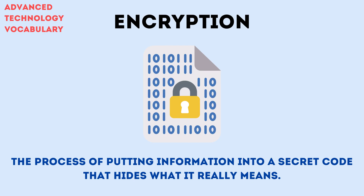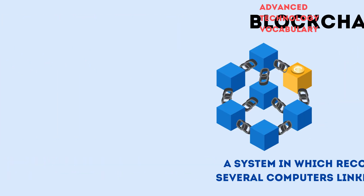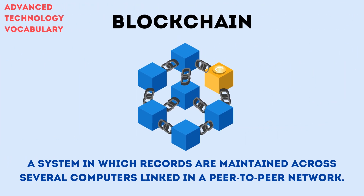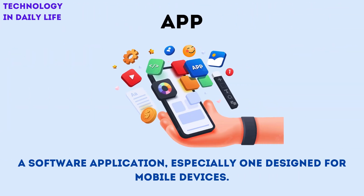Encryption is the process of putting information into a secret code that hides what it really means. A blockchain is a system in which records are maintained across several computers linked in a peer-to-peer network. An app is a software application, especially one designed for mobile devices.